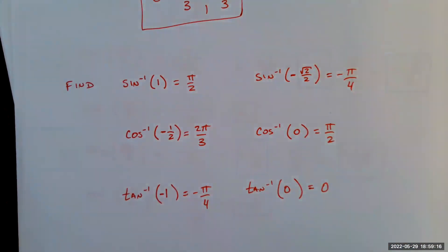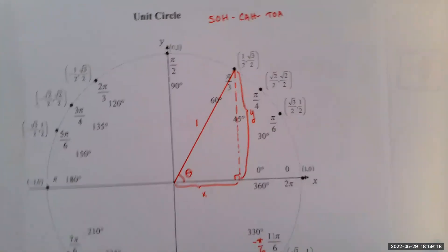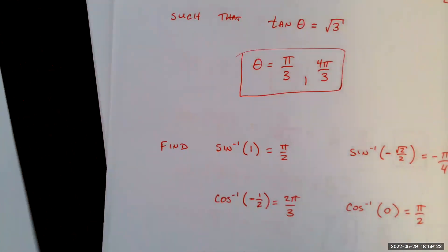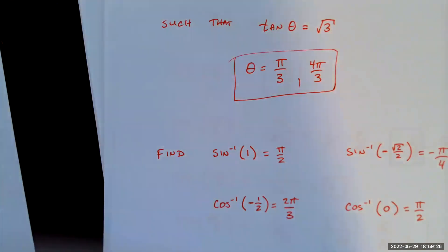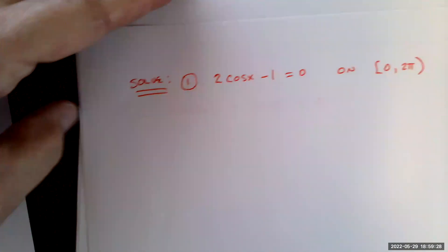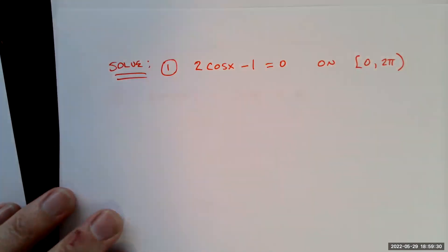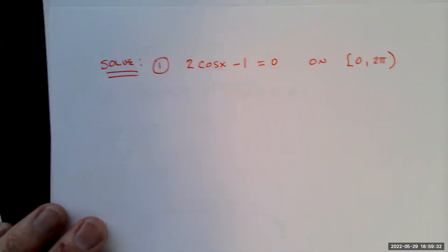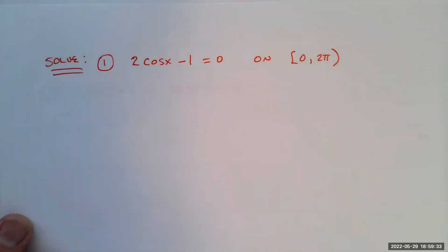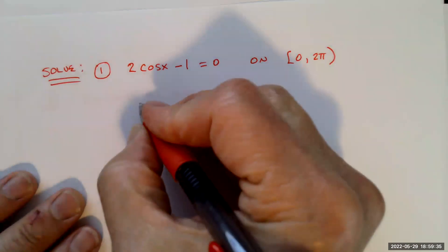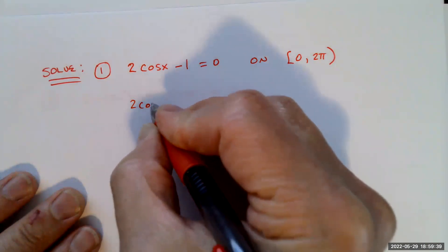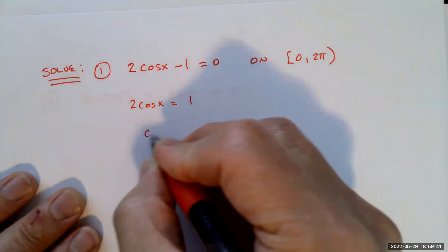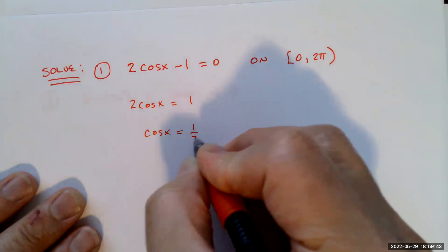That leads to solving trig equations. Suppose I want to solve 2cos(x) − 1 = 0 on the interval from 0 to 2π. I add 1 and divide by 2, giving cosine of x equals 1/2.